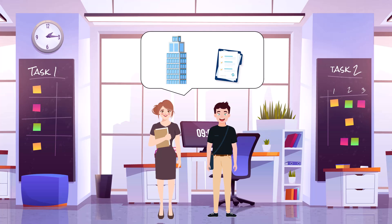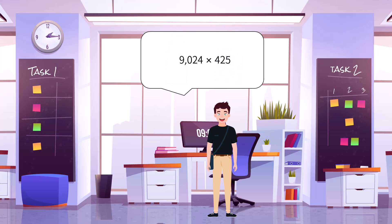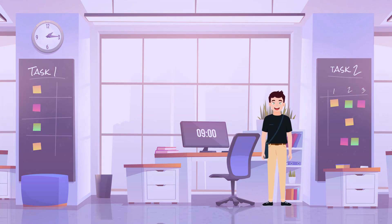Jim was required to calculate the total extra cost. So the equation to calculate now is 9,024 times 425. We are now again doing a multi-digit multiplication with zeros.